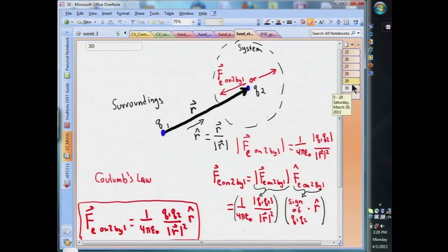We can write this more compactly by dropping the absolute value bars from the product of the charges. The sign of that product multiplied by R hat will always give us the correct direction. This expression for the electric force is called Coulomb's law and is rigorously correct when both our system and the object in the surroundings are point-like. That is, the spatial extent of the charges is small compared to the magnitude of R, the distance between them.